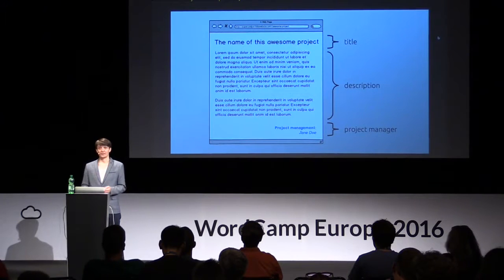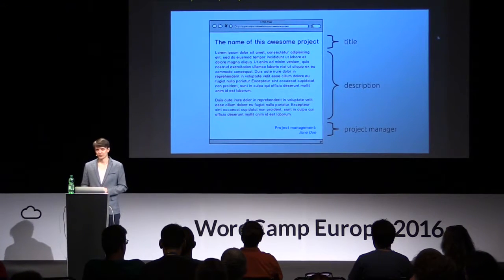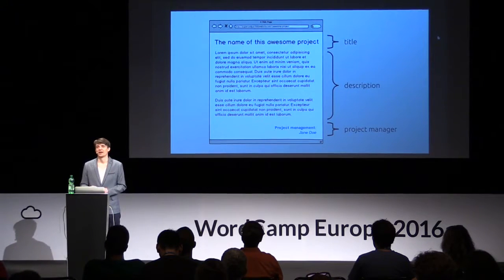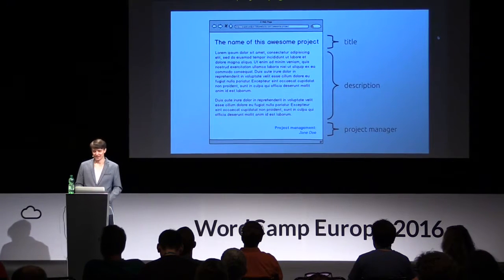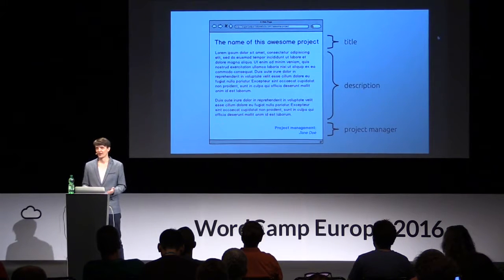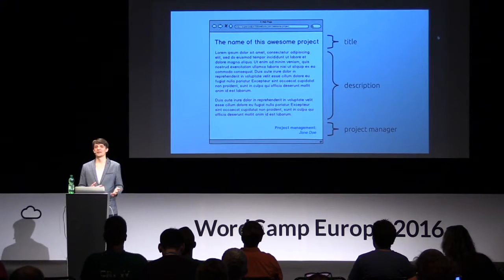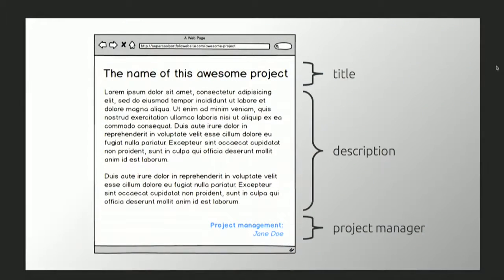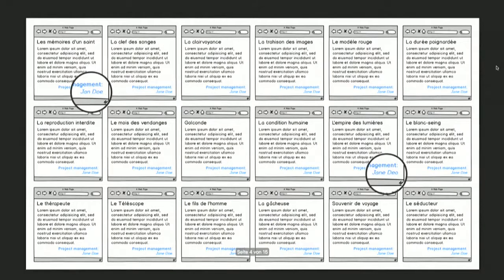And that works, but now imagine that this site already exists for quite some time and you've already created a lot of those project pages. And now one of your project managers marries and therefore her second name changes and you want to update all the projects so it has the new name. How do we do it? Well, you just open the page, it's just some text, you change the name, press save and you're done. Oh wait — then you realize you've got to do that for all the other pages as well, which is a pretty tedious manual process of going through all the pages and changing the name.